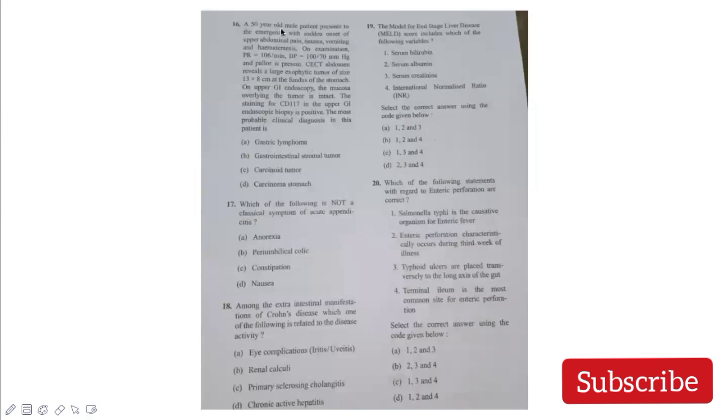A 50-year-old male presents to emergency with sudden onset upper abdominal pain, nausea, vomiting, hematemesis. He's tachycardic and hypotensive. CT abdomen reveals a large exophytic tumor 13 by 8 cm at the fundus of stomach. On upper GI endoscopy, mucosa of tumor is intact with positive staining for CD117. If CD117 staining is positive and the tumor is very large, the diagnosis is gastrointestinal stromal tumor. Which is NOT a classical symptom of acute appendicitis? Anorexia is seen, periumbilical colic that migrates to right iliac fossa is seen, nausea is seen, but constipation is usually not seen.